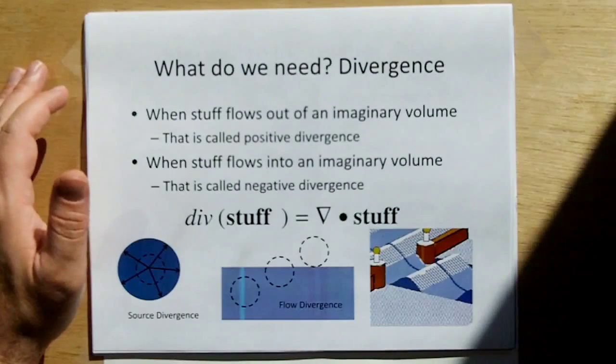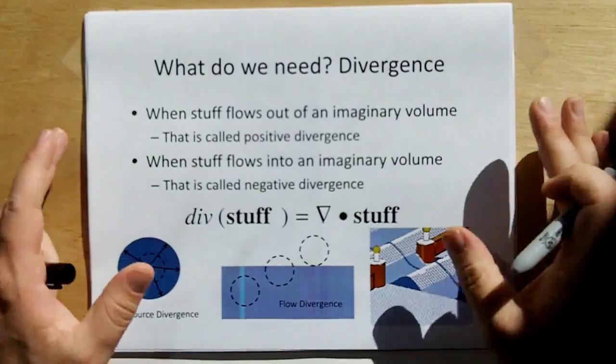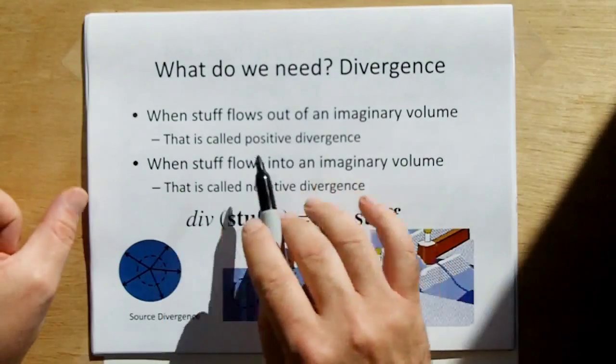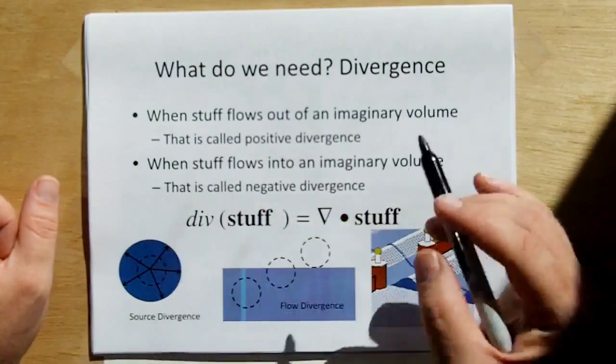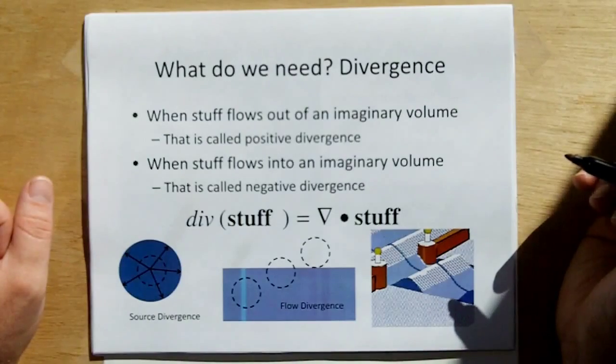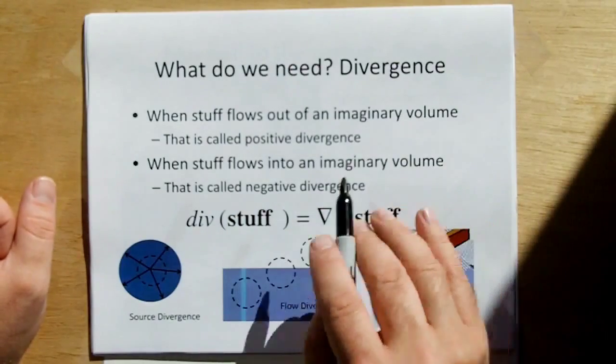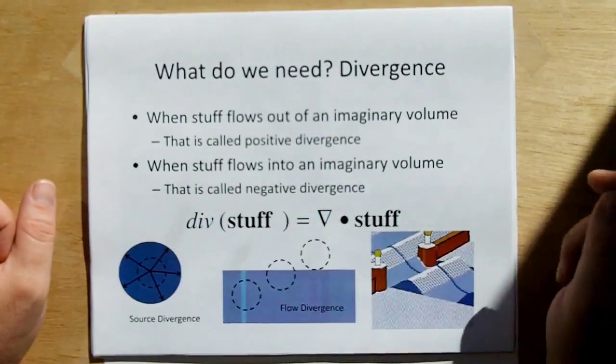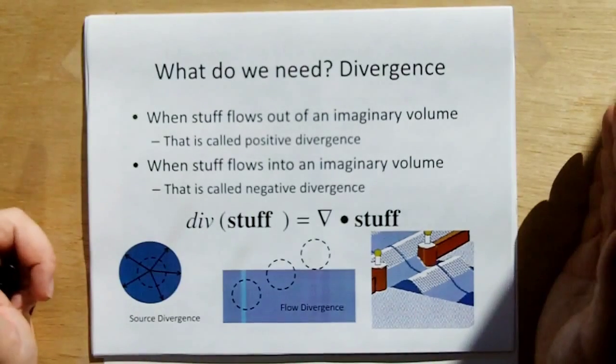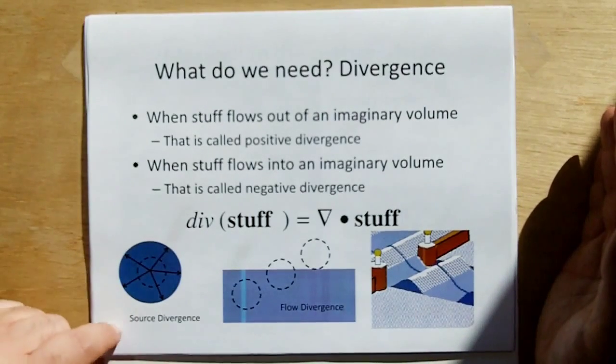So what do we need to explain this phenomenon? Well, we need a thing called divergence. When stuff flows out of an imaginary volume, that's called positive divergence. When stuff flows into an imaginary volume, that's called negative divergence. And the divergence comes in two basic forms.